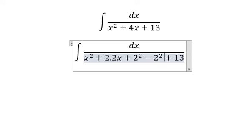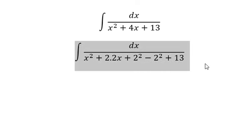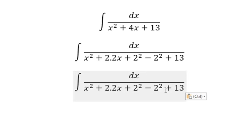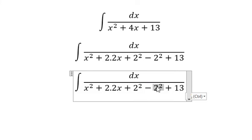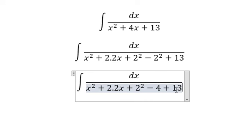That means we need to minus 2 squared because we want to create a plus b to the power of 2, so that we can use trigonometric substitution. 13 minus 4 gives you positive number 9.